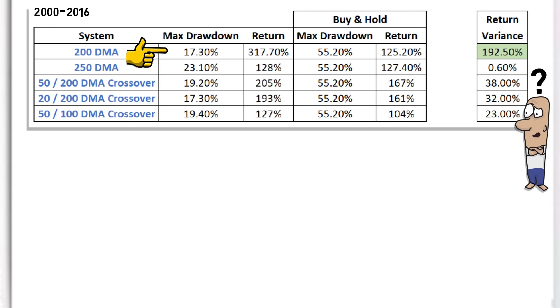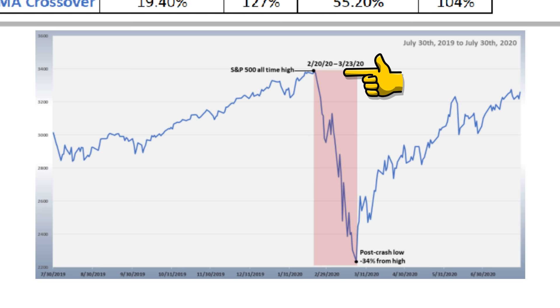A buy and hold strategy would have seen a drawdown from peak to trough of 34% between the end of February to the end of March.